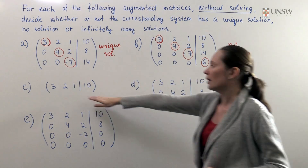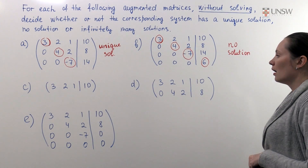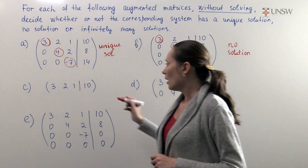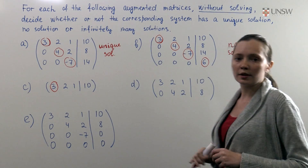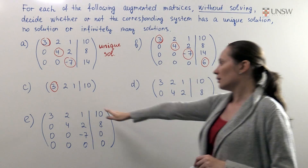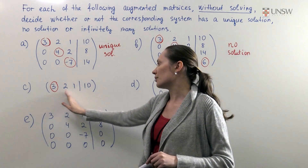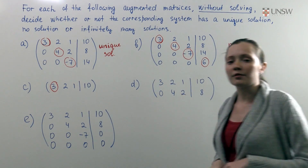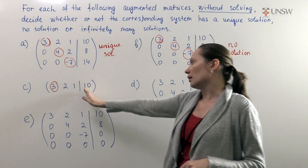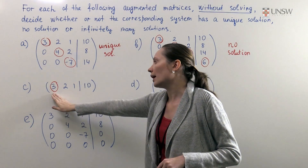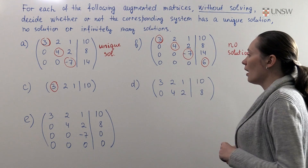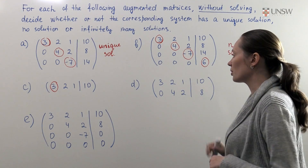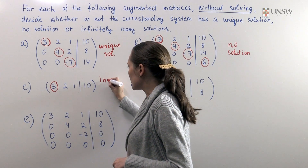Now let's have a look at the matrix from part C. First we determine all leading terms. In this matrix we have one leading column and the rest of the columns are non-leading. We look at the constant vector — it is a non-leading column. Therefore we look at the remaining columns. In this case we have one leading column and two non-leading columns. Therefore we conclude that this system has infinitely many solutions.